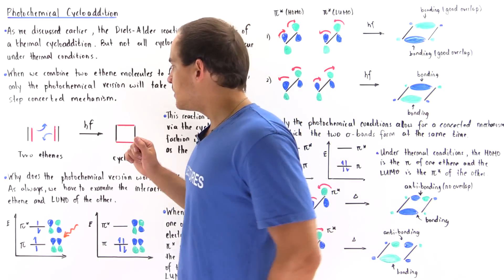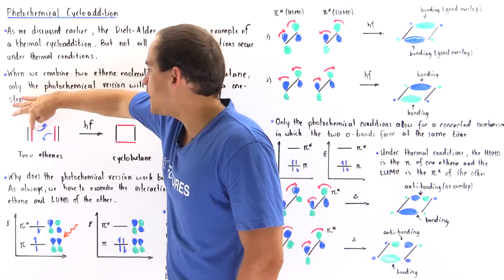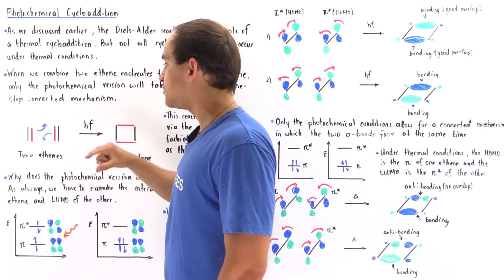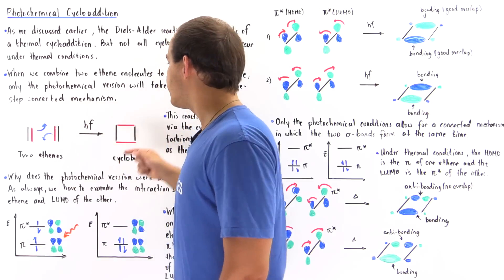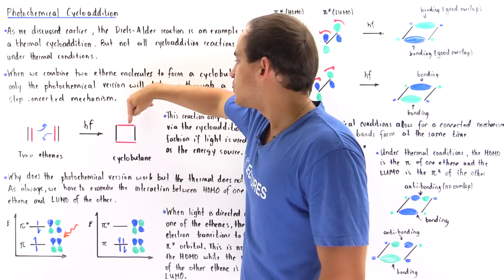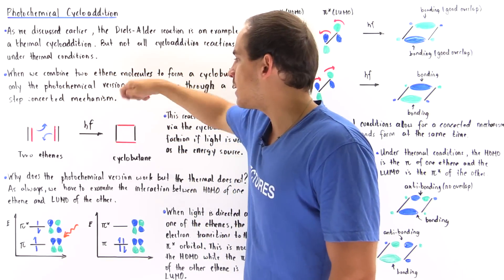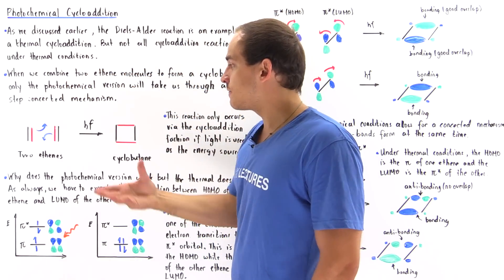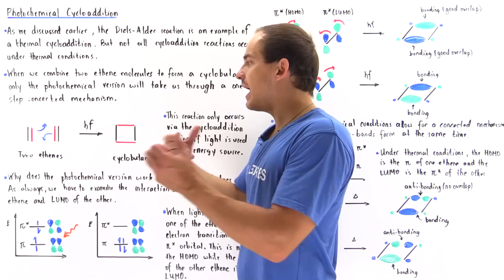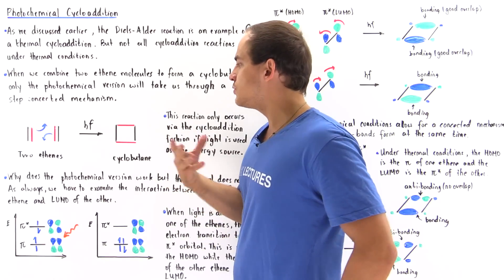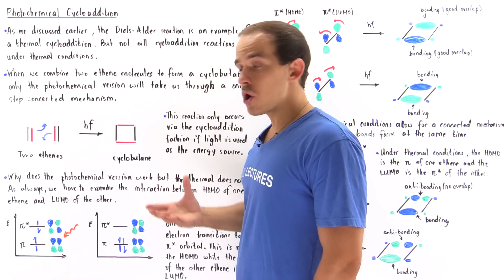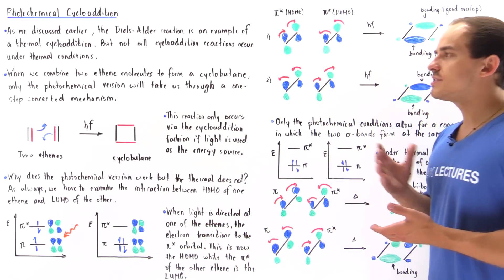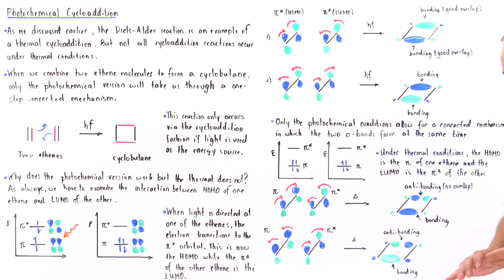In this reaction, the two pi bonds of each ethene break. Each one forms a sigma bond, so we break two pi bonds and form two sigma bonds. We transform the two ethenes — the two pi systems — into a single ring structure, our cyclobutane. This is known as the cycloaddition reaction.